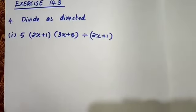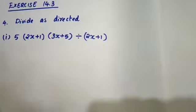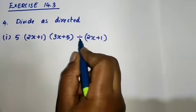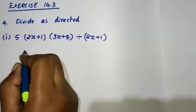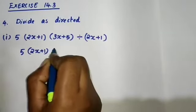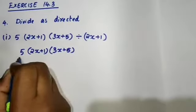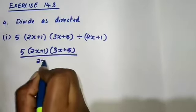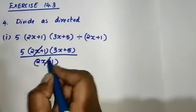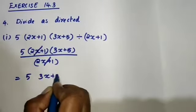Exercise 14.3, Question number 4. Divide as directed. First one: 5 into 2x plus 1 into 3x plus 5, divided by 2x plus 1. That is 5 into 2x plus 1 into 3x plus 5 divided by 2x plus 1. 2x plus 1 and 2x plus 1 cancel here. So it is equal to 5 into 3x plus 5.